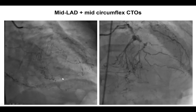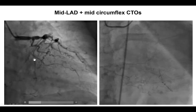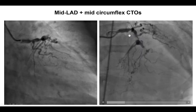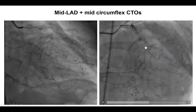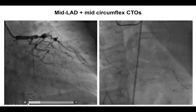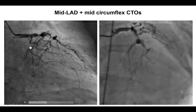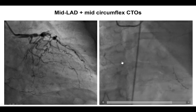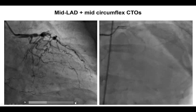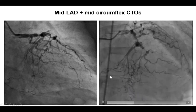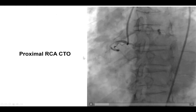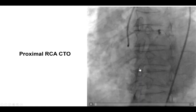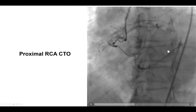This is her coronary angiogram demonstrating severe multivessel coronary disease. There is significant disease in the distal left main, a CTO in the mid-LAD. There is also a CTO in the mid-circumflex with a distal vessel filling through epicardial collaterals. There are septal collaterals supplying the PDA, and there is a CTO of the right coronary artery with a marginal branch supplying the distal circumflex.